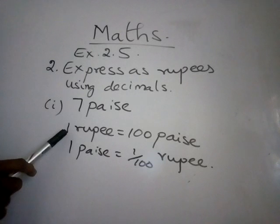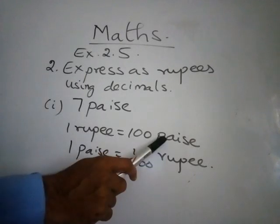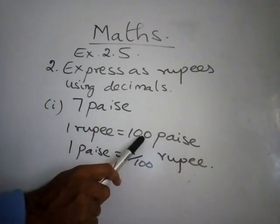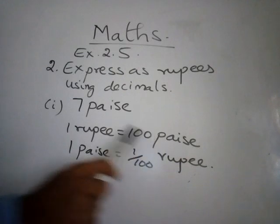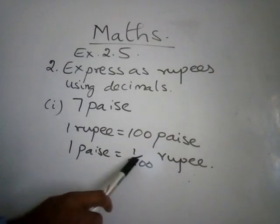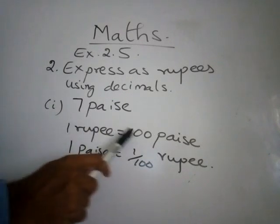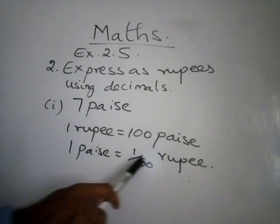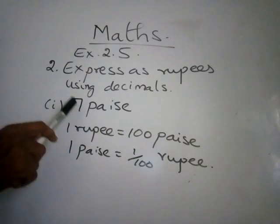What is the default we should know is 1 rupee equal to 100 paise. This will not be given in any question, so this we should know earlier. 1 rupee equal to 100 paise, or the other way, 1 paise equal to 1 by 100th of the rupee.